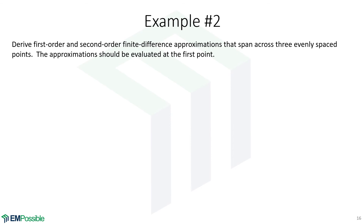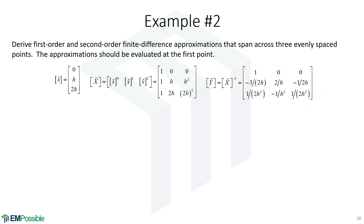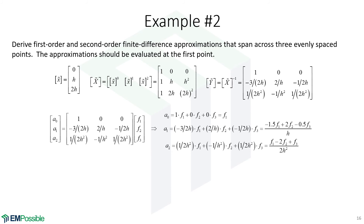Let's derive the same first- and second-order finite differences across the same three points, but now evaluate the derivatives at the first point. The only difference in the procedure is the list of shifted coordinates: the first point is zero, the second point is at h, and the third point is at 2h. We build the X matrix the same way — column of ones, shifted coordinates, shifted coordinates squared — then invert it. Here's our inverted matrix. We get polynomial coefficients by pre-multiplying that matrix by the symbolic function values f_1, f_2, f_3.